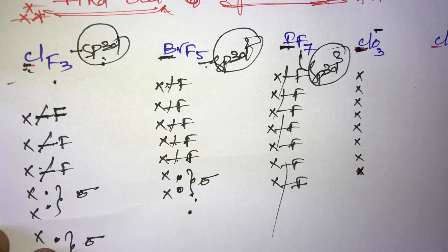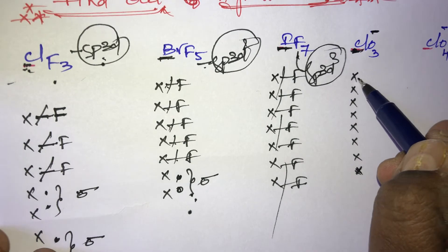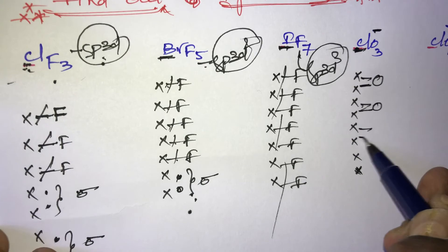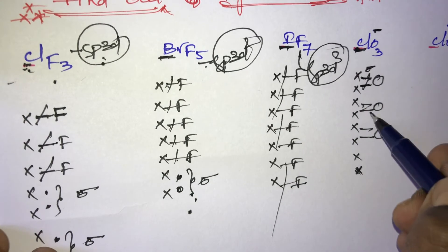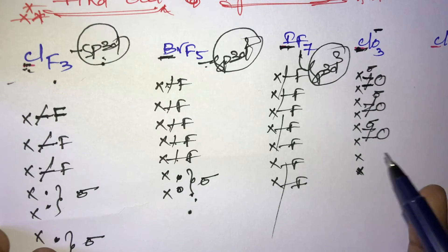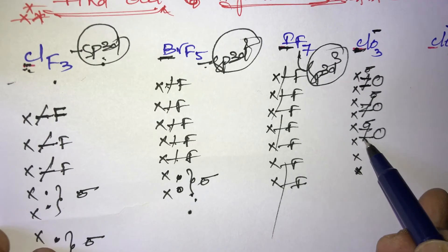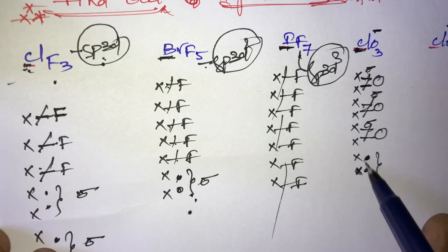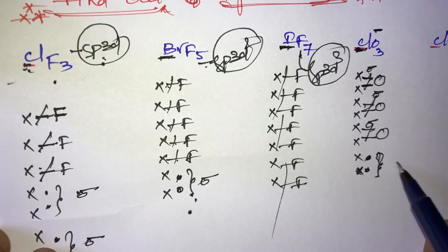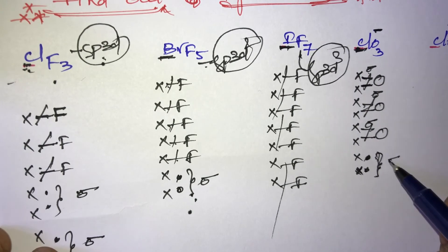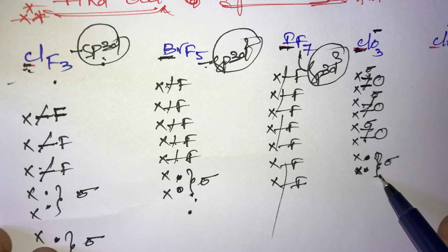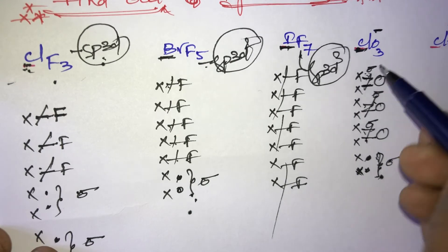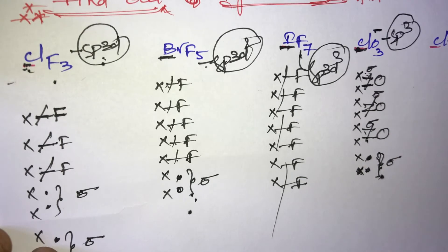Each oxygen forms a double bond with chlorine, but a double bond contains only one sigma bond. So three oxygens give three sigma bonds. Two electrons remain, forming one lone pair, which counts as one sigma bond. Total sigma bonds = 3 + 1 = 4. Therefore, in ClO₃⁻, the hybridization of chlorine is sp³.